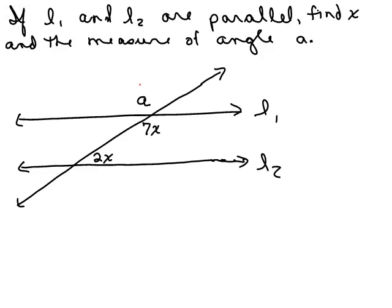Okay, one more problem. If line 1 and line 2 are parallel, find X. So again, we've got this transversal going through and we're trying to find 2X and 7X. So, see if you could figure this out on your own first.